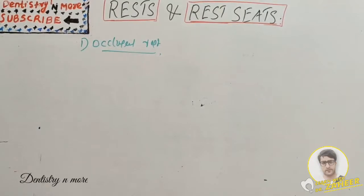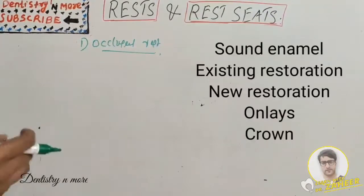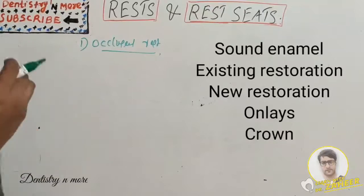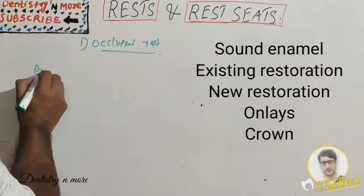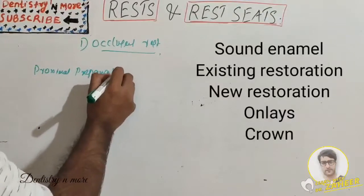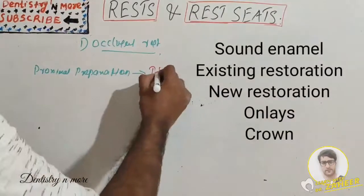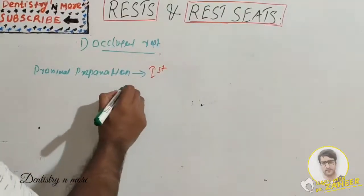When preparing an occlusal rest seat in sound enamel, proximal preparation must always come first — never preceded by the rest seat preparation. Diamond points of approximately the size of number six and eight round burs, or carbide burs, may be used for the preparation.